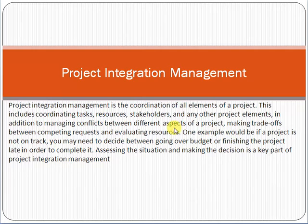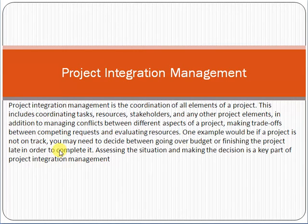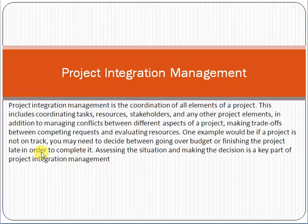For example, if a project is not on track, you may need to decide between going over budget or finishing the project late. There are two factors: one is budget and one is schedule. As a project manager, by assessing the situation and customer feedback, you have to decide whether to go over budget or accept the delay in the project.